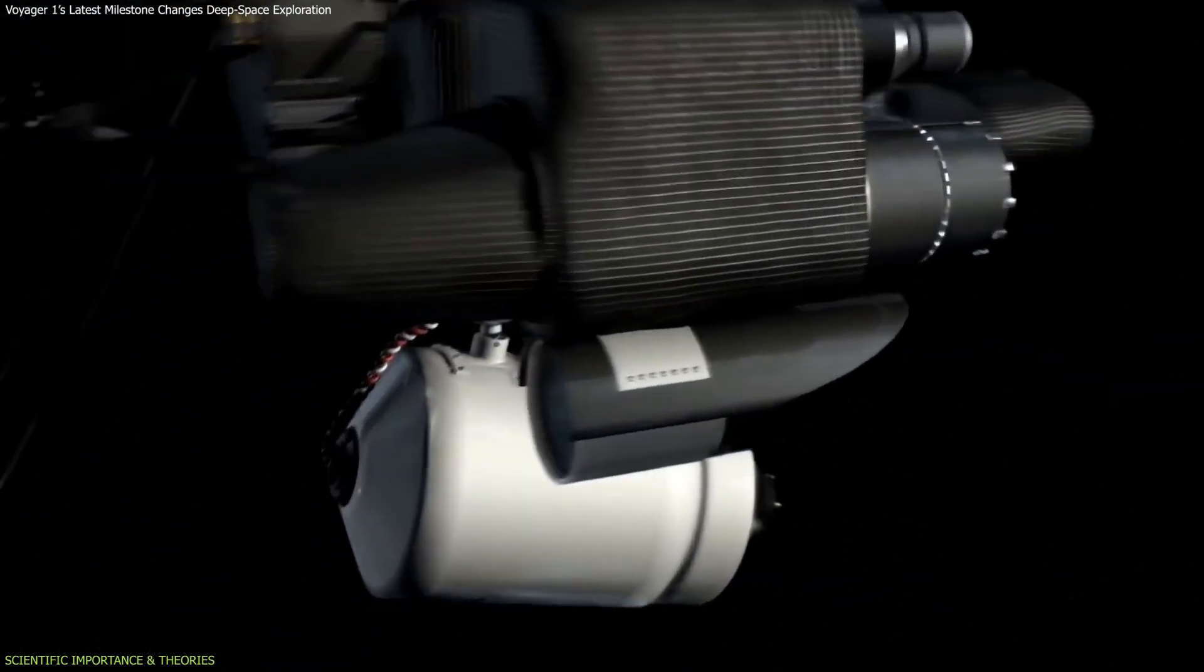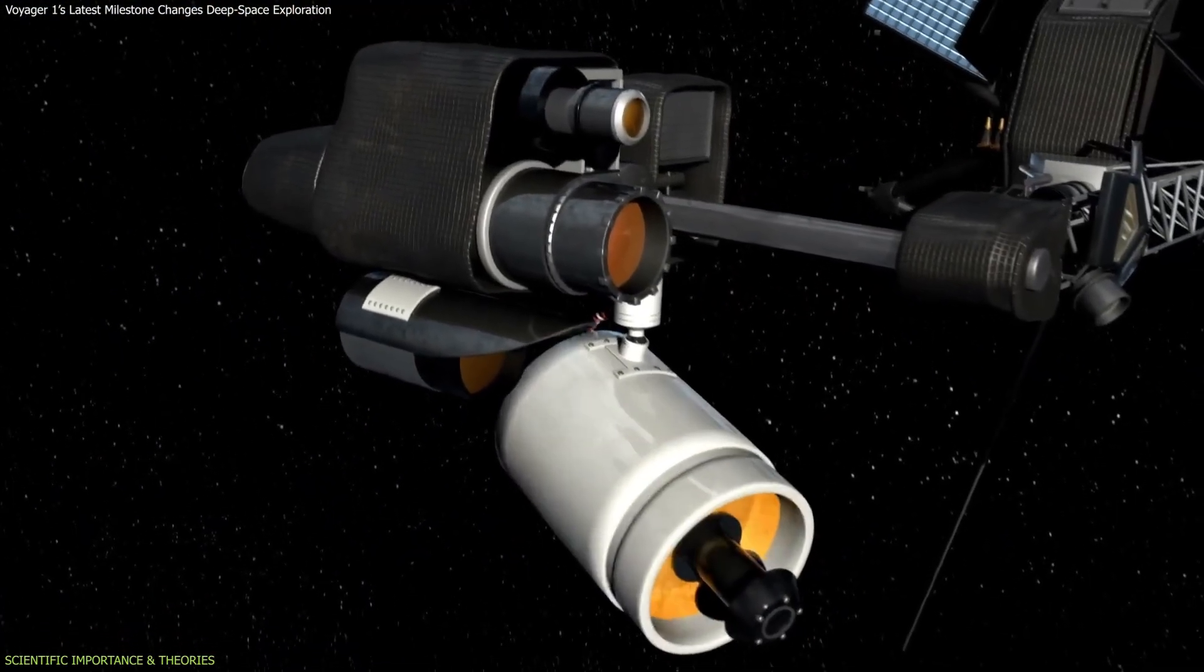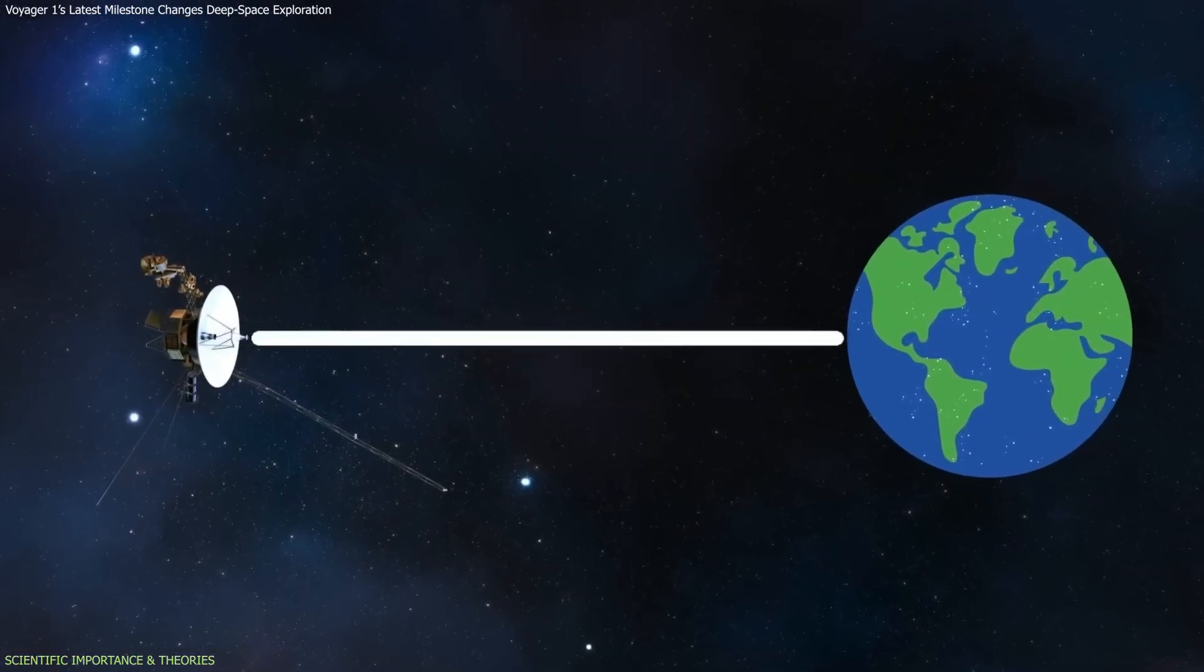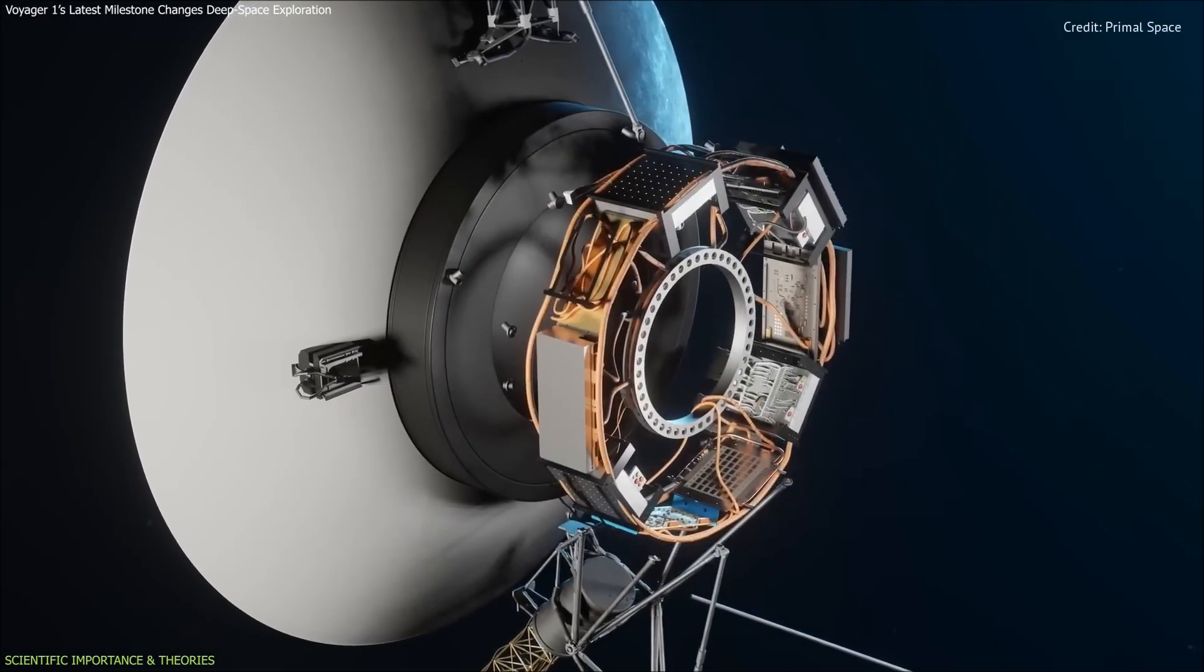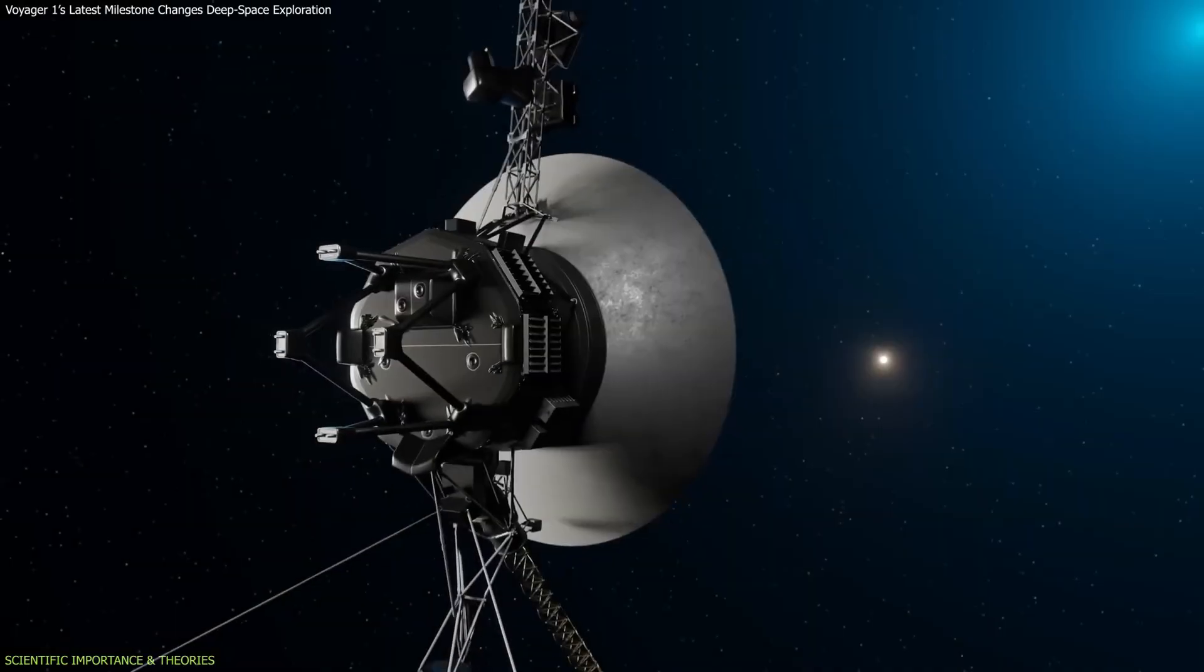Voyager relies more heavily on its built-in ability to maintain orientation and respond to minor issues without immediate guidance from Earth. These automated safety systems were designed in the 1970s.